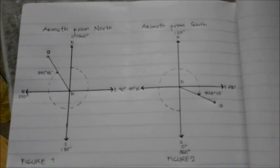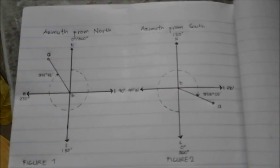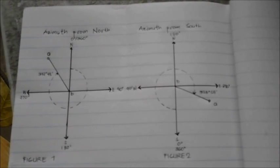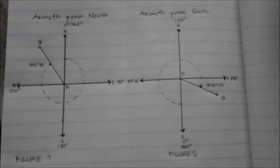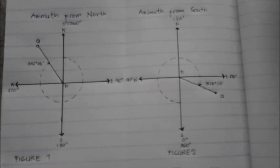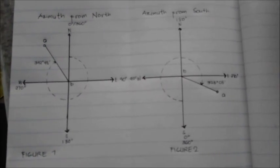For any particular survey, a direction of 0 azimuth is either always north or always south. In practice, azimuths are generally measured from the north branch of the reference meridian for ordinary plane surveys.